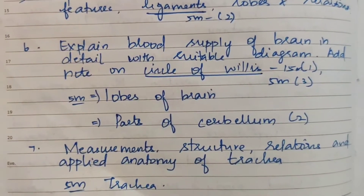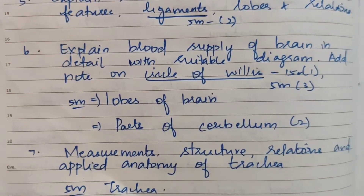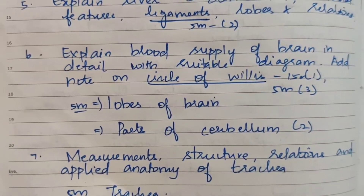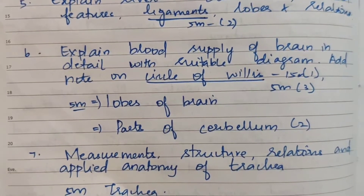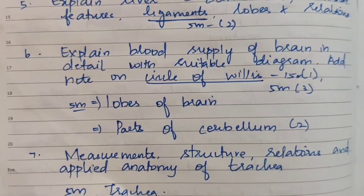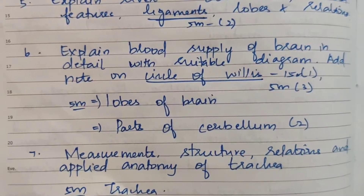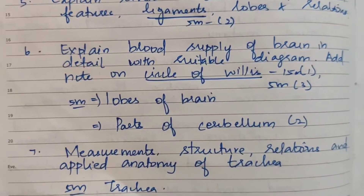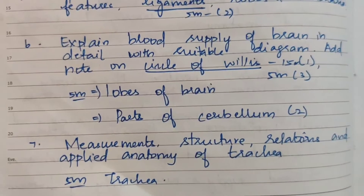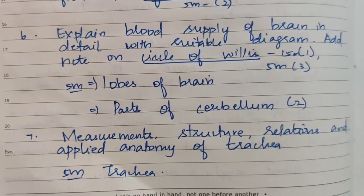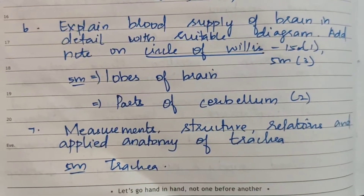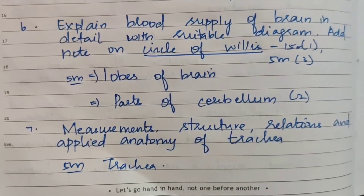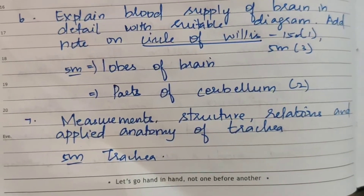The 6th topic: explain blood supply of the brain in detail with a suitable diagram; add a note on the Circle of Willis for 15 marks. Circle of Willis has appeared 3 times for 5 marks. Other questions include lobes of the brain and parts of the cerebellum, each appearing 2 times.